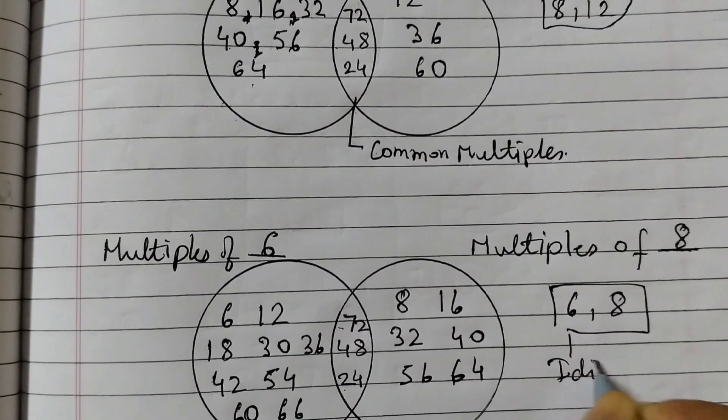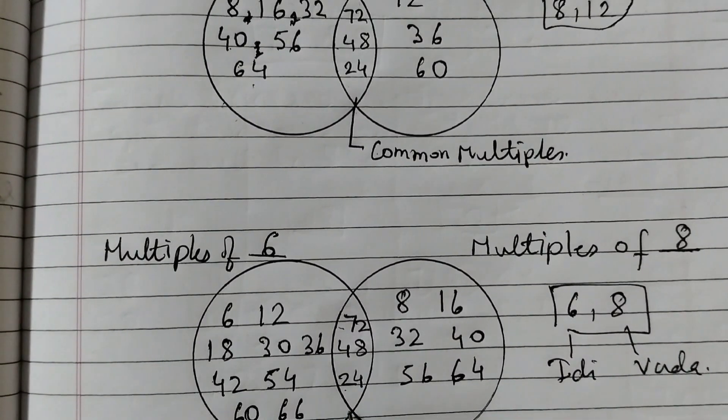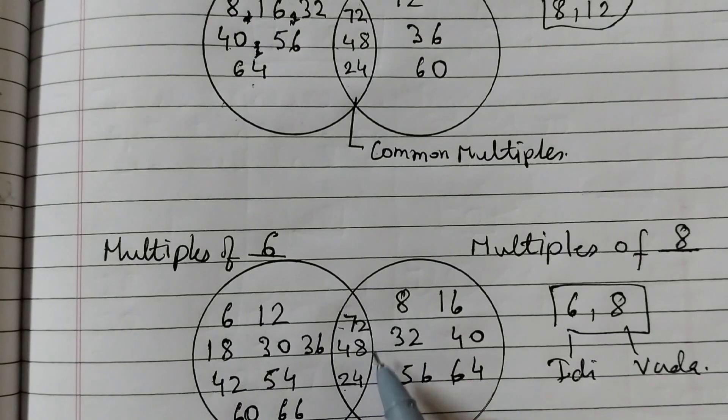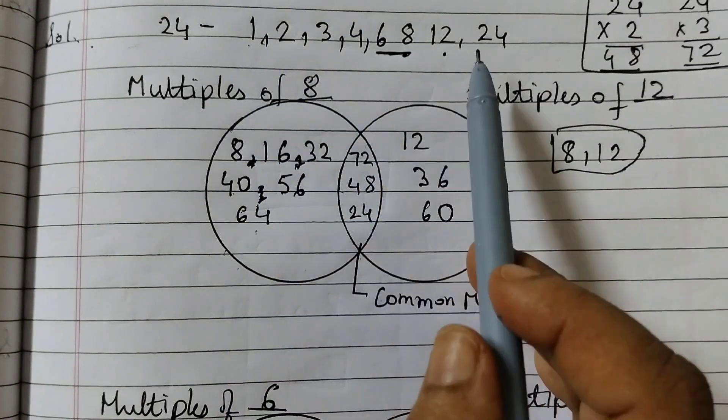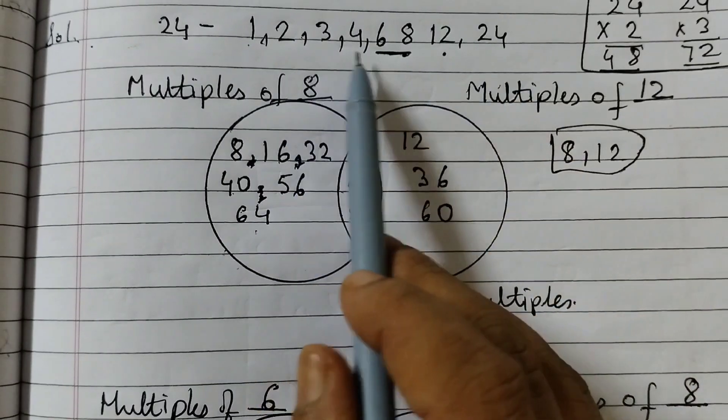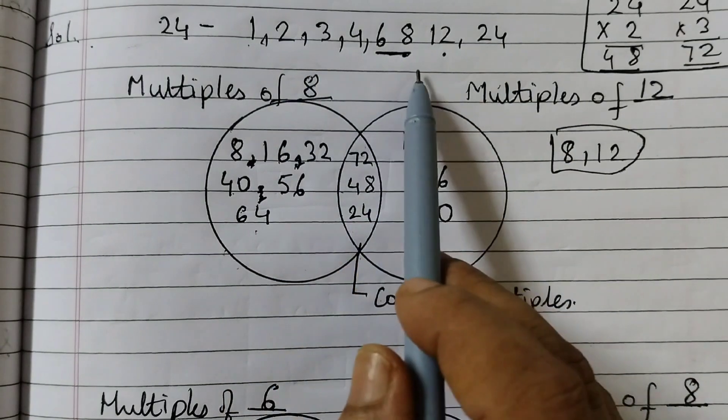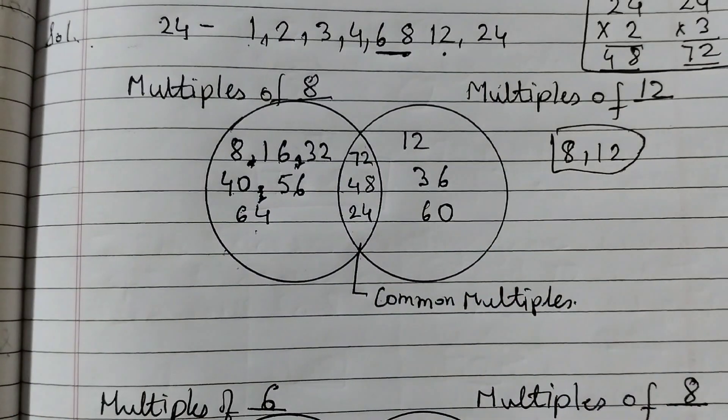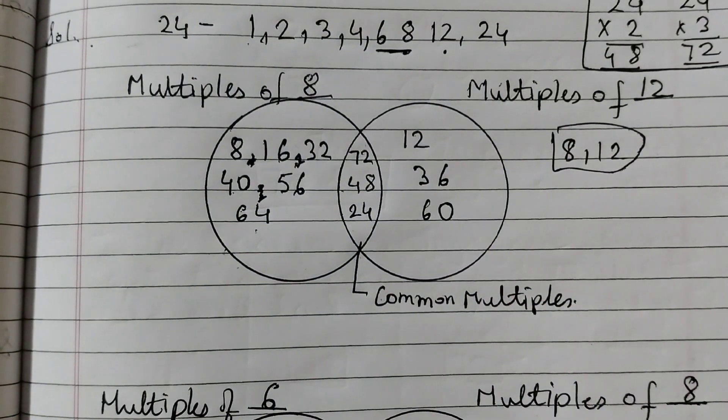This is for Idli, this is for Vada, and these are the common multiples 24, 48, and 72. You can take any two numbers. Don't take 1 and 24, except 1 and 24, you can take any pair like 2, 4, you can take 3, 4, 4, 6, 6, 8, 8, 12. Anything is correct, I mean there is no fixed answer for this. I hope this is clear to you.